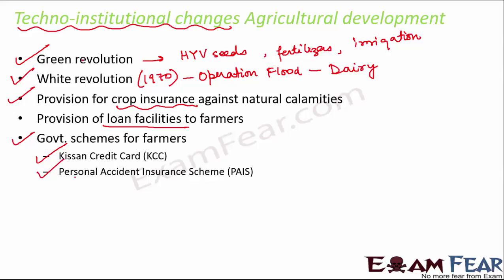Another government scheme was PAIS — the Personal Accident Insurance Scheme. This scheme covered all KCC card holders, meaning all farmers who had a Kisan Credit Card. It provided coverage against death and disability due to accidents. If a farmer meets with an accident, not only the farmer suffers but his entire family, since he is unable to work. For all such accidental or death cases, insurance was provided to the surviving family members.